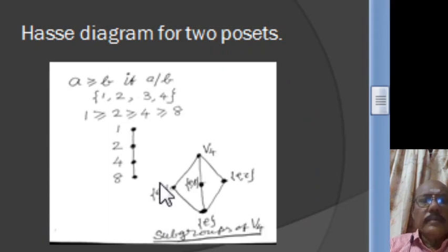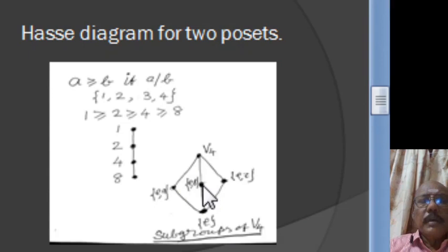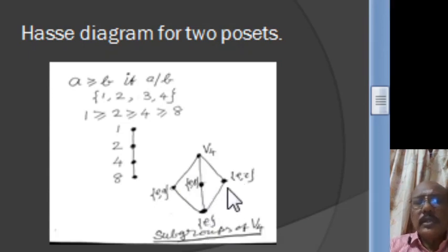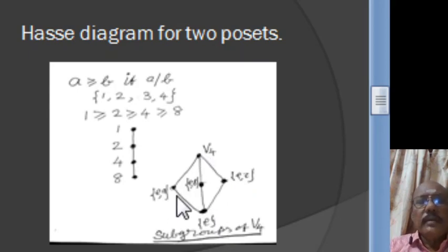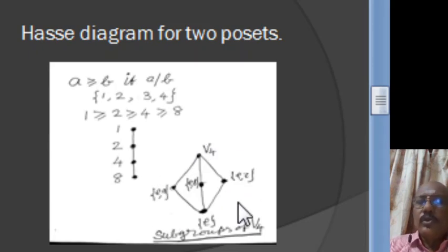In the Hasse diagram, {E,A} is a cover for {E}, {E,B} is another cover for {E}, and {E,C} is also a cover for {E}. And V4 is a cover for all three of these subgroups. So we get this Hasse diagram for the set of all subgroups of V4.